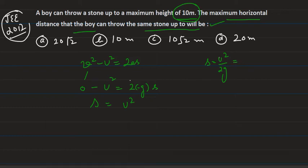And this is given to us: the maximum height is 10 meters. Now we are asked the maximum horizontal distance, so maximum horizontal distance means we are asked R maximum.